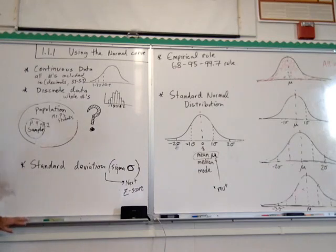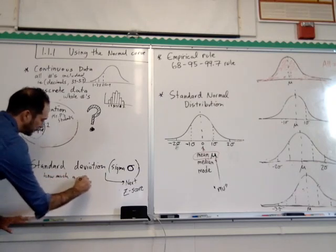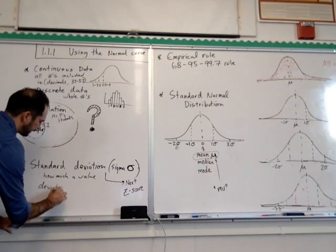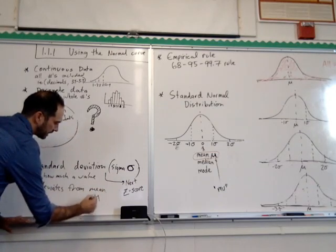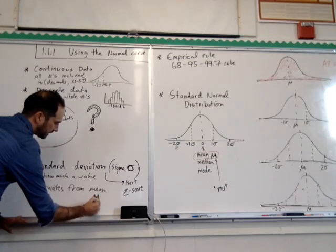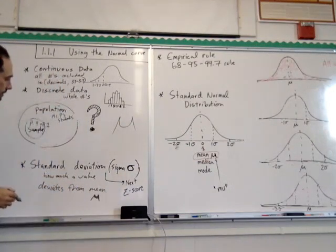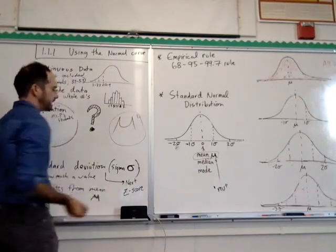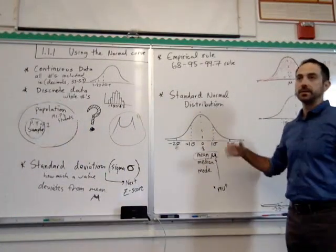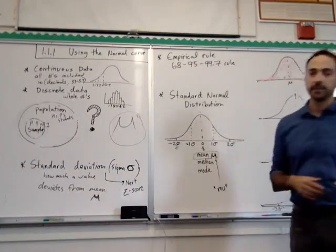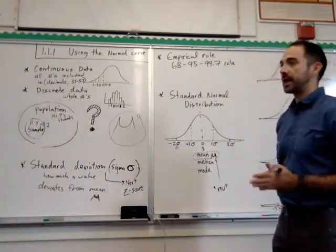Next we're talking about standard deviation — that's the main thing for today in this lesson. Standard deviation is just how much a value deviates from the mean. From here on out, we're going to denote the mean with the symbol mu. Mu kind of looks like an M, or like a U with a long tail on it. When we're talking about standard normal distribution, the mean is also the median — the middle number when all numbers are sequential — and it's also the mode, the number that happens most often. Standard deviation is just how far you're moving away from the mean.